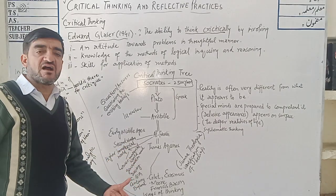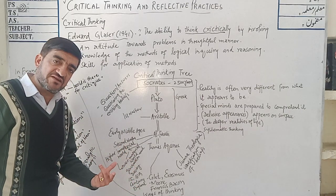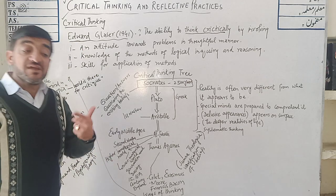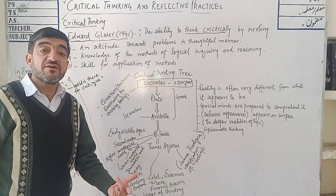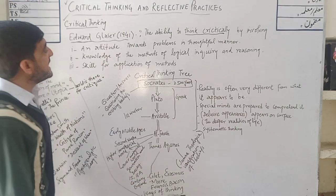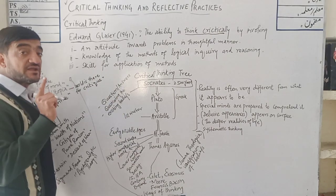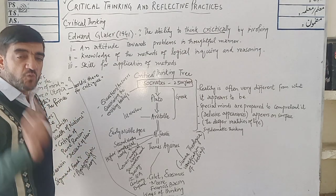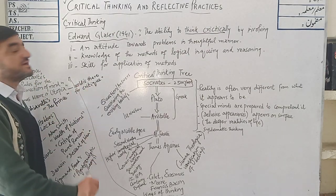If I say something is wrong, why is it wrong? If I say it is right, why is it right? Give me the reasons. Three things are involved — necessary, vital, and compulsory for critical thinking.